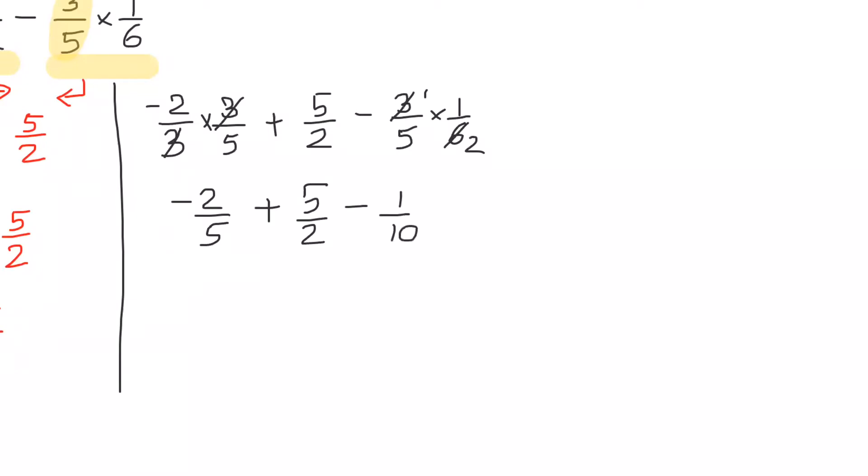Three and six cancel, minus one upon ten. Now you use the LCM. LCM of all the three numbers is ten, so you have to multiply here by two and here by five, no need to multiply the last number.